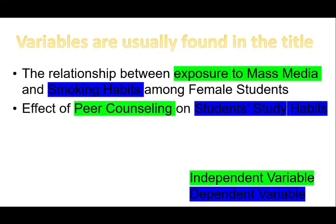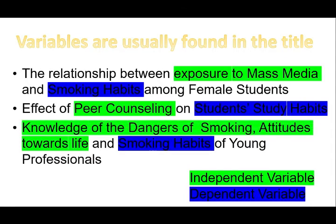Another example: 'Effect of peer counseling on student study habits.' There is already a keyword there — 'effect.' Peer counseling is the cause or the intervention, and the result is student study habits — that's the dependent. Finally, 'Knowledge of the dangers of smoking, attitudes towards life, and smoking habits of young professionals.' The independent variable is knowledge levels and attitudes towards life, while the dependent variable is smoking habits.